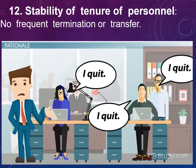The twelfth principle is Stability of Tenure of Personnel, which means no frequent turnover or transfer in an organization. According to Henry Fayol, if there is frequent turnover, the organization will not be successful. The job of a person or worker in an organization should be stable — only then will that organization become successful and attain its objectives.